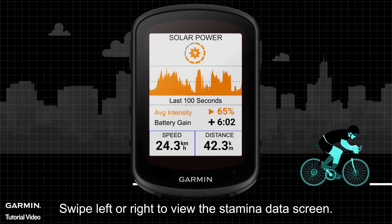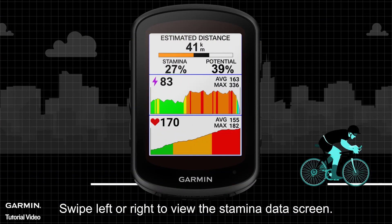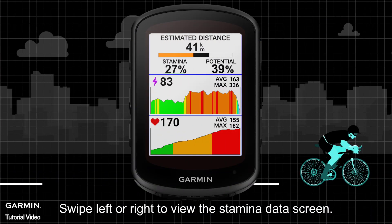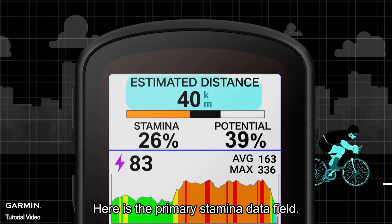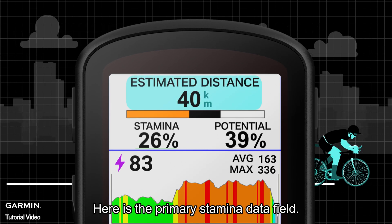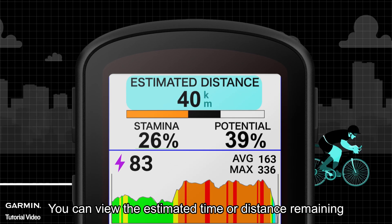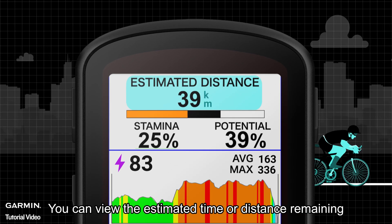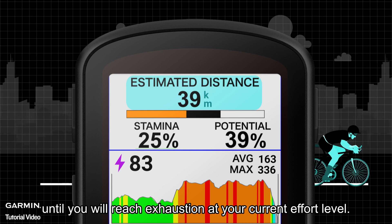Swipe left or right to view the stamina data screen. Here is the primary stamina data field, where you can view the estimated time or distance remaining until you will reach exhaustion at your current effort level.